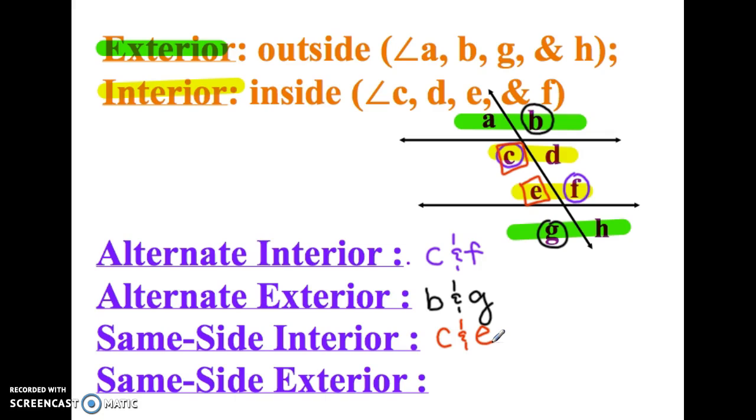Okay, and then the last one of these, same side exterior angles. So we want it to be on the outside, but on the same side. So this time maybe B and H. They're both on the right. They're both on the outside. Okay, and I'm going to ask you to find extra types of all of these.